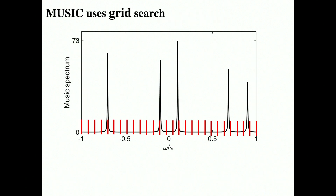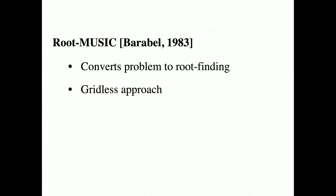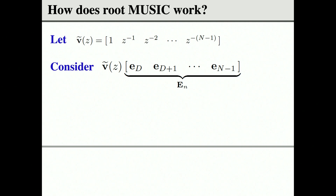The MUSIC spectrum is plotted from the set of eigenvectors. Wherever there are peaks, omega has information — the first peak tells you there is a first direction of arrival, the second peak a second direction, and so on. In this example there are 12 sensors and five uncorrelated sources, and the averaging is done over about 400 samples. This algorithm had some problems because there is a grid search needed to find peak locations, which was very limiting. Root MUSIC came up later, converting the problem into a root-finding problem.